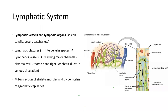To start with, the lymphatic system comprises lymphatic vessels and lymphoid organs. They are basically lymphatic plexuses which collect lymph from the interstitial spaces. Through these vessels, they reach two major channels, finally to the thoracic duct and into the venous circulation. The movement of lymph is facilitated by the milking action of skeletal muscles, by peristalsis of lymphatic capillaries, and by negative intrathoracic pressure.